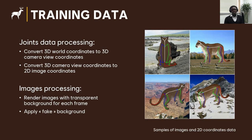To train the machine learning models, we need to transform those raw data into different formats required for each model. Using the camera parameters data, we converted the 3D world coordinates of the joints to their 3D camera view coordinates, and then converted the 3D camera view coordinates into 2D image coordinates. Since our initial images were created with a transparent background, we also processed those images by adding some fake backgrounds to make them look more realistic. On the right side are some samples of our dataset showing the cougar on a background with the 2D coordinates of the joints.